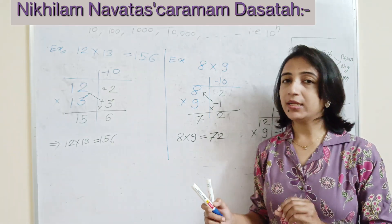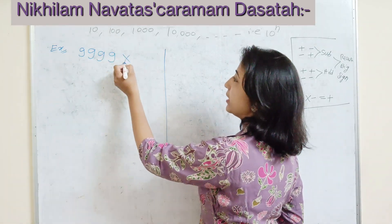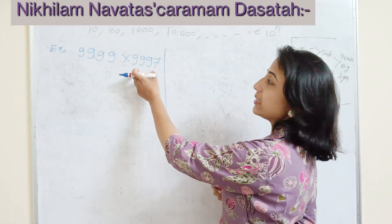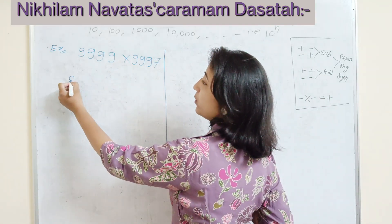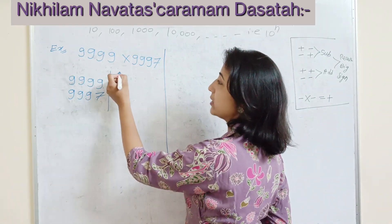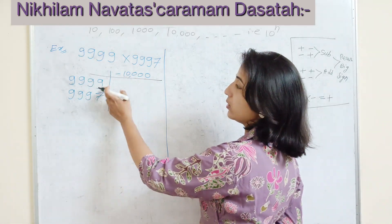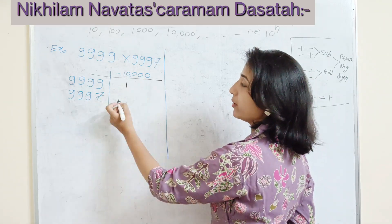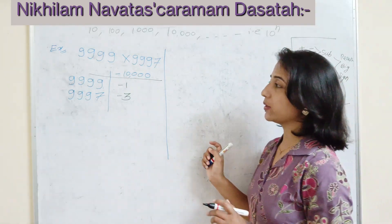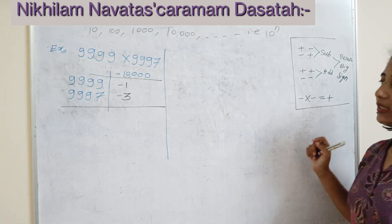Now let's see a larger example. Suppose our numbers are 9999 and 9997. These numbers are nearest to the base 10,000. Using the same process, subtract 10,000 from each: 9999 − 10,000 = −1, and 9997 − 10,000 = −3. The product of the deviations is (−1) × (−3) = +3.